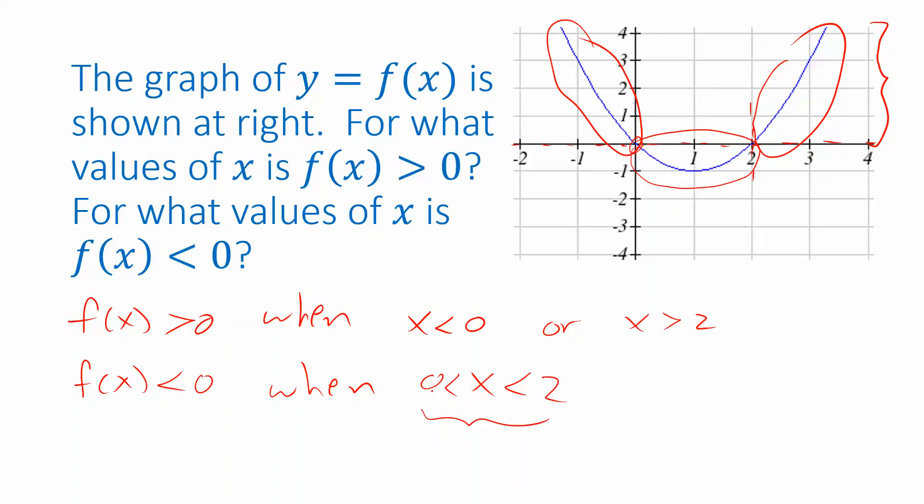And you can express that as just a single compound inequality like this. If I write these two inequalities, x between two values, this is the same as saying that x is greater than 0 and x is less than 2. The x values that have both of those conditions satisfied are the ones in this interval.